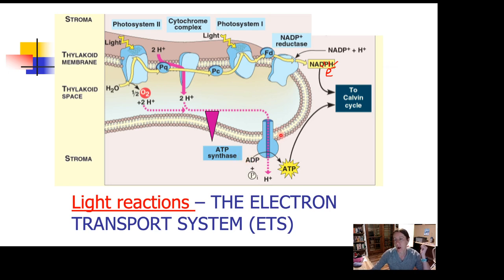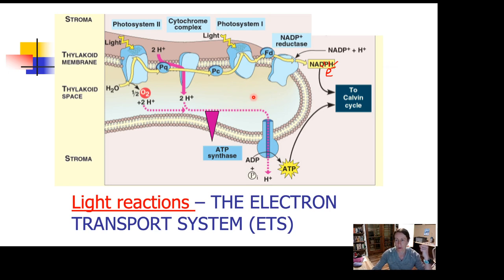This enzyme ATP synthase can only do this when it's spinning around — it actually physically has to spin around like a little spindle. And what makes it spin is to have hydrogen ions moving through its core. So it's like a tunnel, it's like a turnstile. All these hydrogen ions are trapped in the thylakoid space; they want to get out, they want to diffuse out, they don't like to be so crowded together. And the only way they can get out is through this tunnel — they can't just wiggle through the membrane because they're charged. So the only way for them to get out is through this tunnel, and as they go through it they make it spin around, and as it spins around the enzyme is able to take ADP and glue it to P to make ATP.